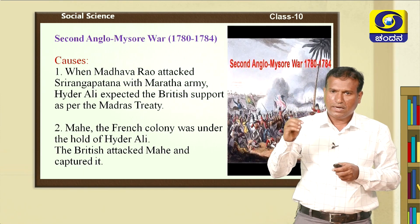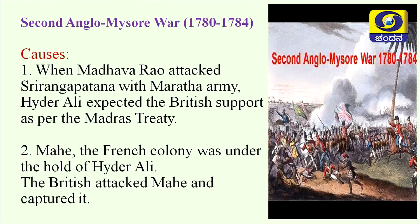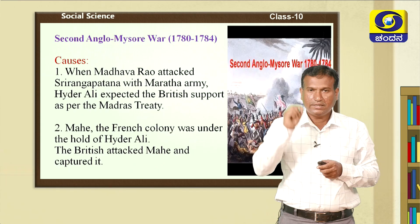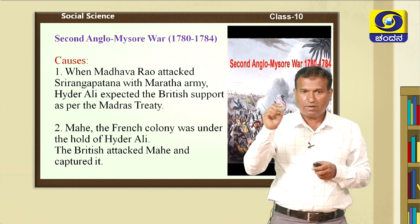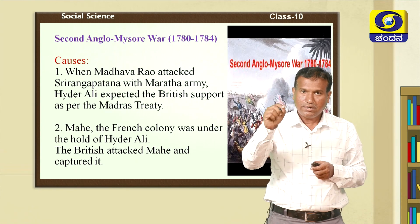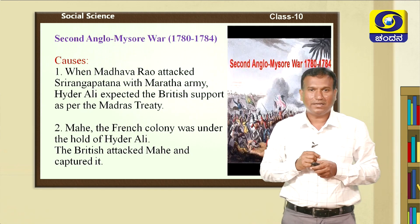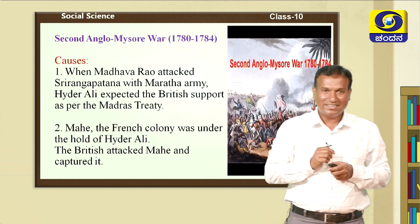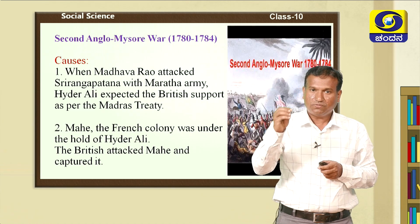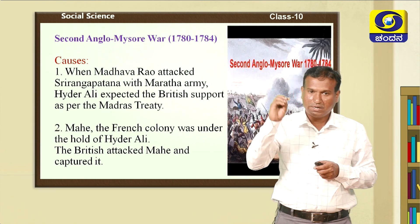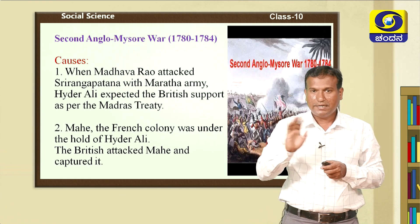First reason: The Maratha Peshwa, Madhava Rao the First, made an attack on Srirangapatna in 1770. According to the Treaty of Madras, the English were supposed to come and help Haidrali. But the English did not keep their promise — they did not come to help Haidrali, thereby breaking the treaty.